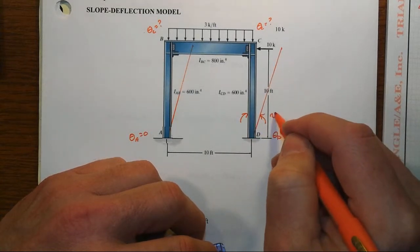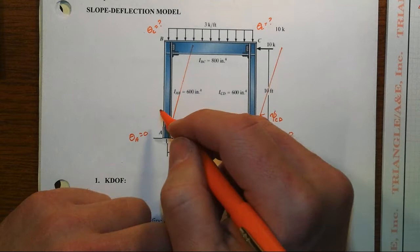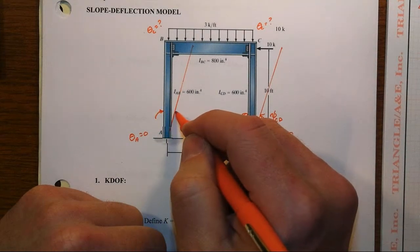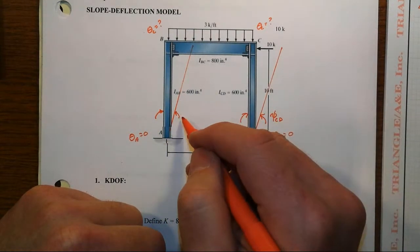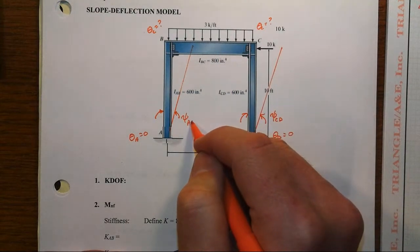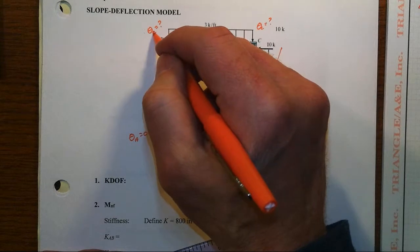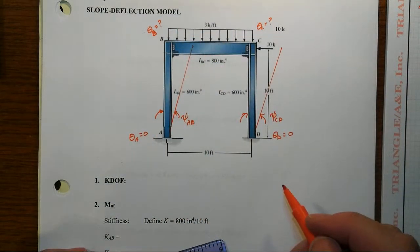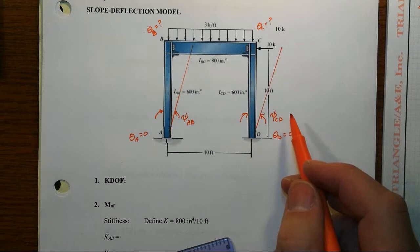And that's the only reason why I'm showing it that way. That does mean by the time we're done with our work, we should anticipate that these chord rotation values will end up being negative.